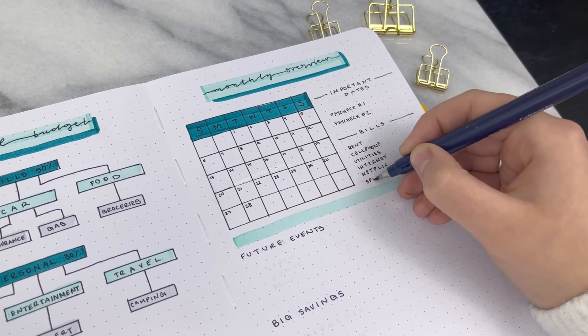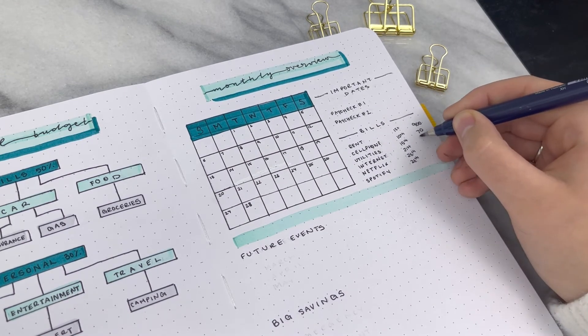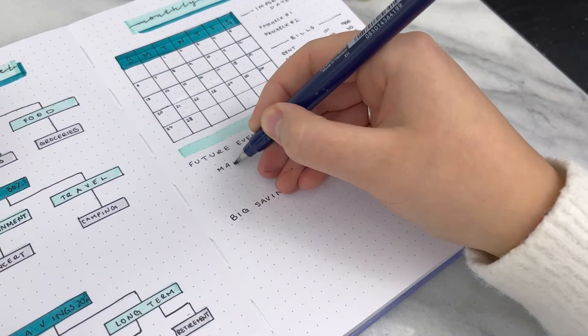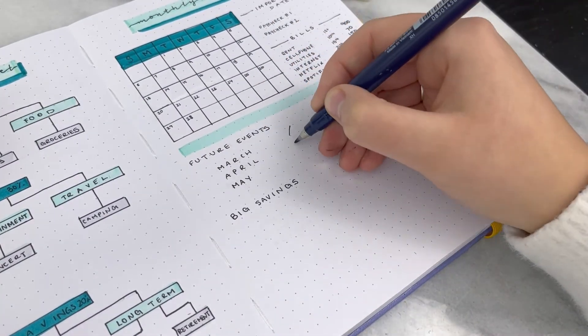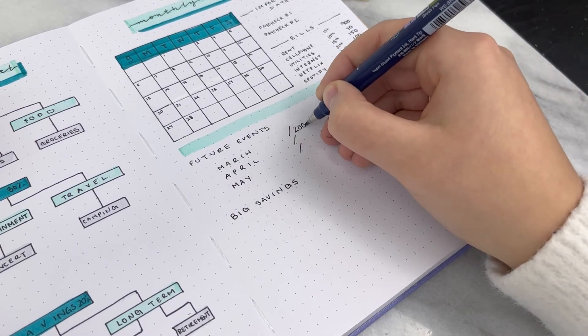So I'm sectioning things off like important dates, bills, future events, and big savings. In my important dates I'm adding in my paychecks, bills, we've chatted about future events. This is a section where I look at the next three months and what I have upcoming and how much do I have saved.